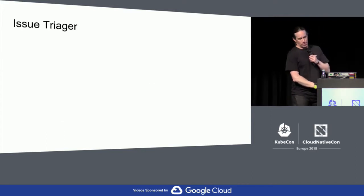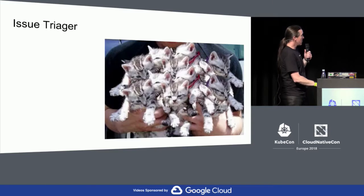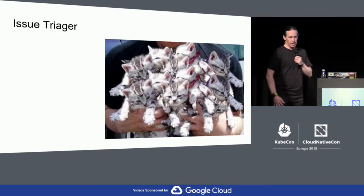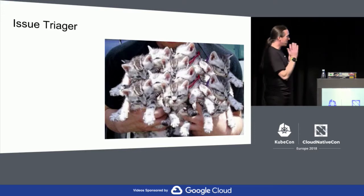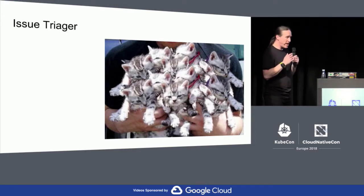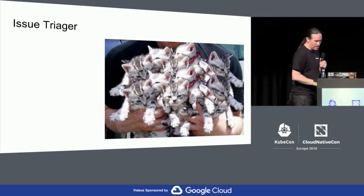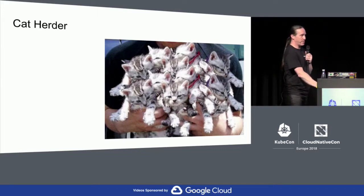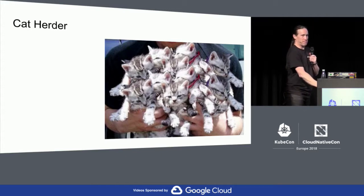Issue triage is the role I have on the release team. And every presentation needs kittens — so here are my kittens. Some of them are grumpy, some are groggy, some are active, some seem happy — like software engineers, that's us on any given day. As an issue triager, you sort of become a cat herder. You have to understand what all these developers are going through and figure out how to get resolution on something.